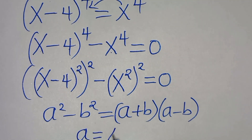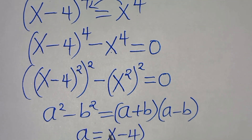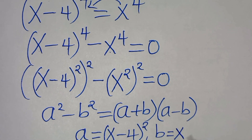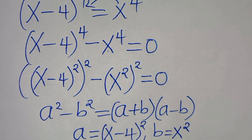From this equation, we have that a is equal to (x minus 4) raised to the power of 2, and b is equal to x to the power of 2.